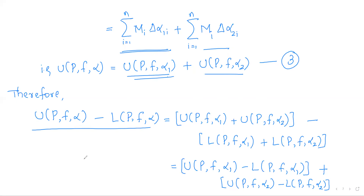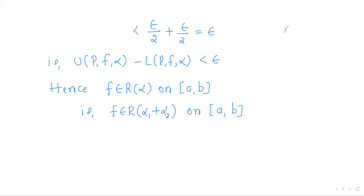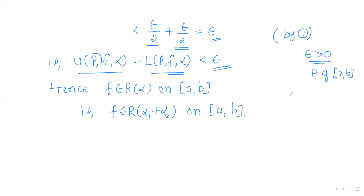Now using these two equations, verify the Riemann criterion for integrability. Consider U(P, f, α) − L(P, f, α) = [U(P, f, α₁) + U(P, f, α₂)] − [L(P, f, α₁) + L(P, f, α₂)] = [U(P, f, α₁) − L(P, f, α₁)] + [U(P, f, α₂) − L(P, f, α₂)]. By the earlier conditions, both terms are less than ε/2, so the difference U(P, f, α) − L(P, f, α) < ε. Thus for any ε > 0, we found a partition P such that U(P, f, α) − L(P, f, α) < ε.